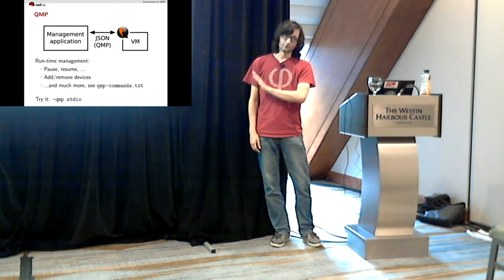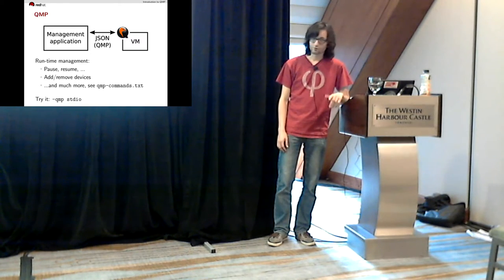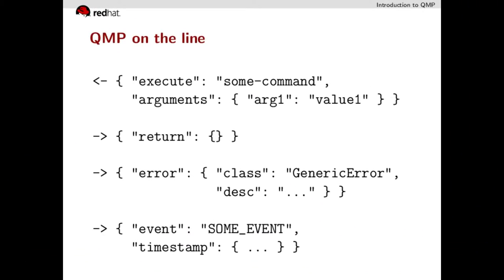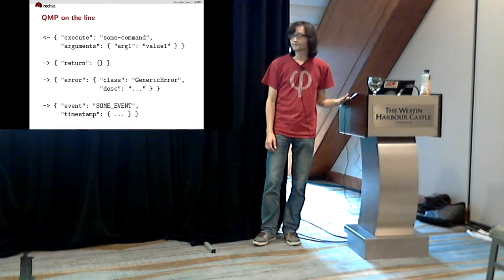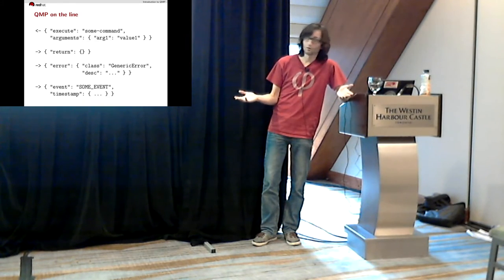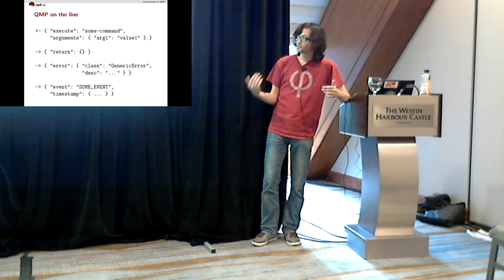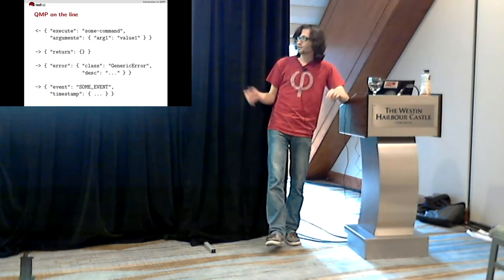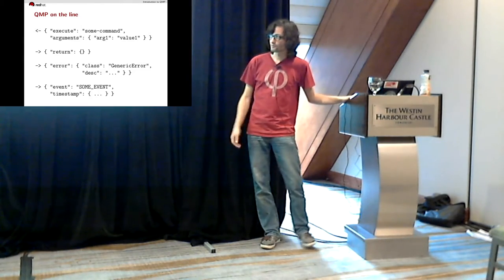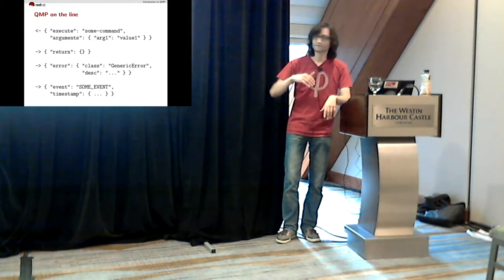While QMP is mainly for management applications, it's based on JSON, so you can use it yourself. Just append the option `-qmp stdio` to the QEMU command line and you'll get a QMP interface on the command line. QMP consists of JSON objects. When you want to send a command, you send a JSON object with an `execute` key whose value is the command name, plus any arguments. If executed successfully, you get a JSON object back with a `return` key. If something went wrong, you get an error object with an `error` key. All of these are synchronous operations.